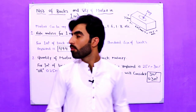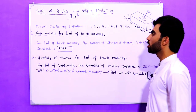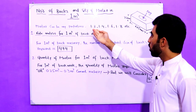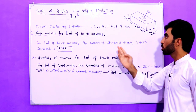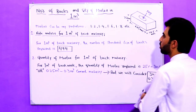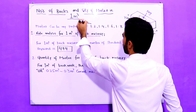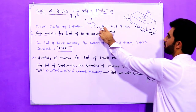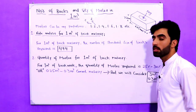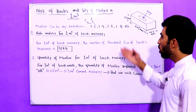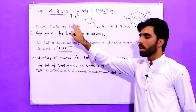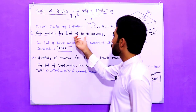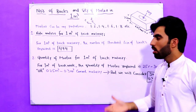First of all, mortar can be in any proportion: 1:2, 1:4, 1:6, 1:8, etc. This means one part is cement and two parts sand, or one part cement and four parts sand, one part cement and six parts sand, and so on. The ratio of mortar can be any proportion.